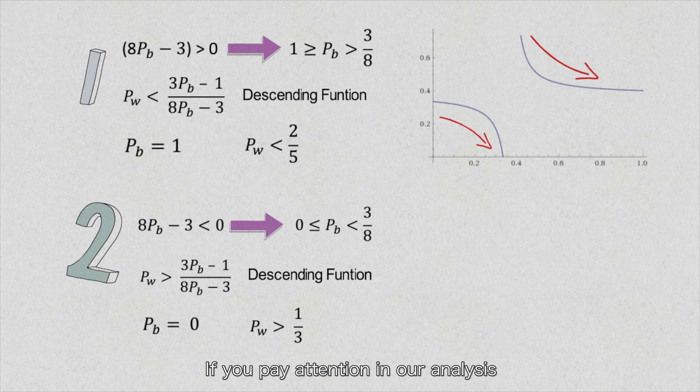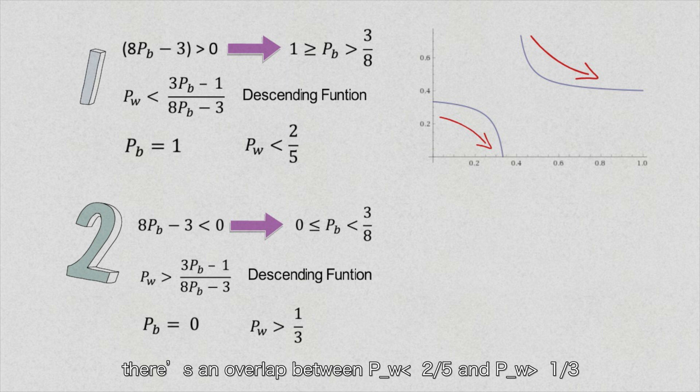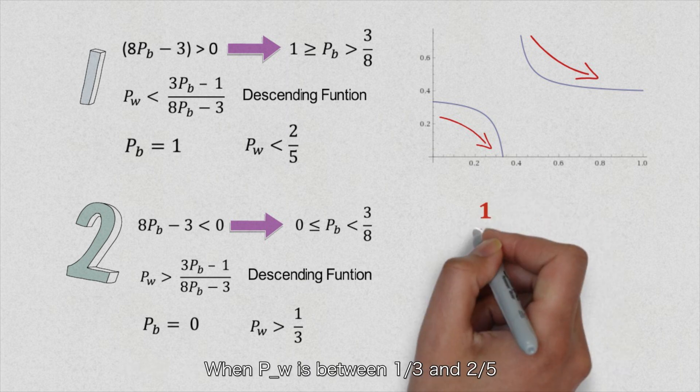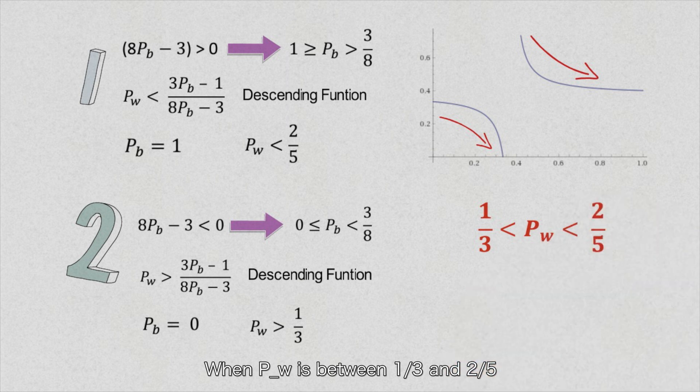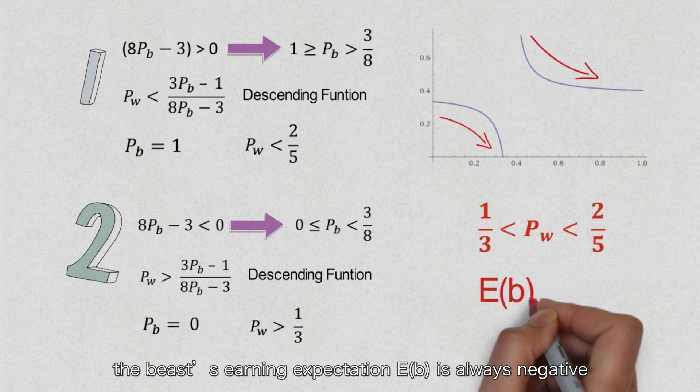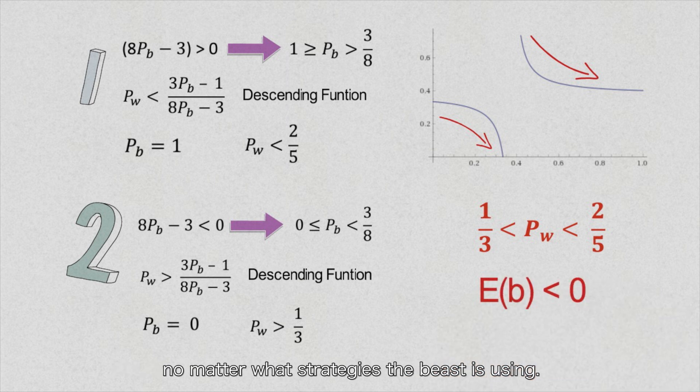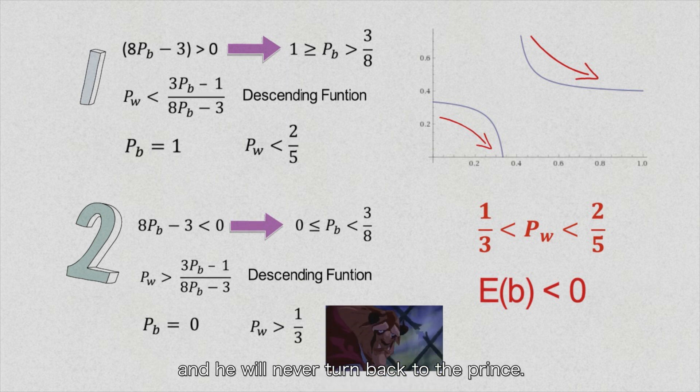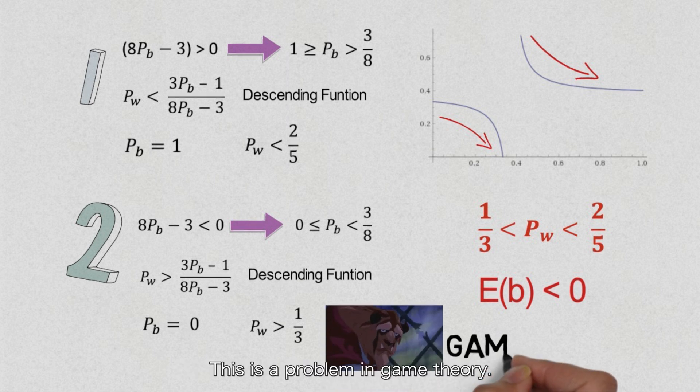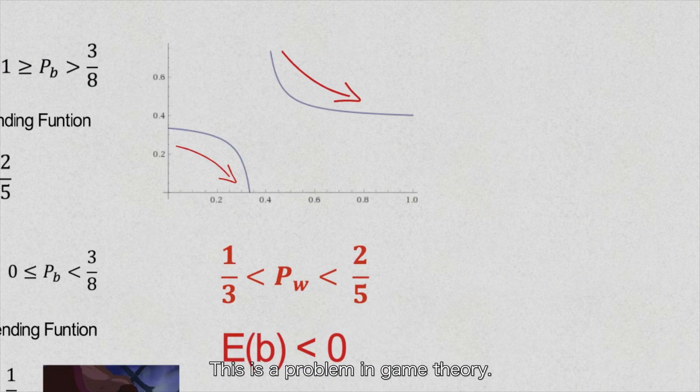If you pay attention to our analysis, there is an overlap between P_w less than 2 over 5 and P_w larger than 1 over 3. When P_w is between 1 over 3 and 2 over 5, the beast's earning expectation, E(b), is always negative, no matter what strategy the beast is using. The beast won't win the game, and he will never return back to the prince. That is a problem in game theory.